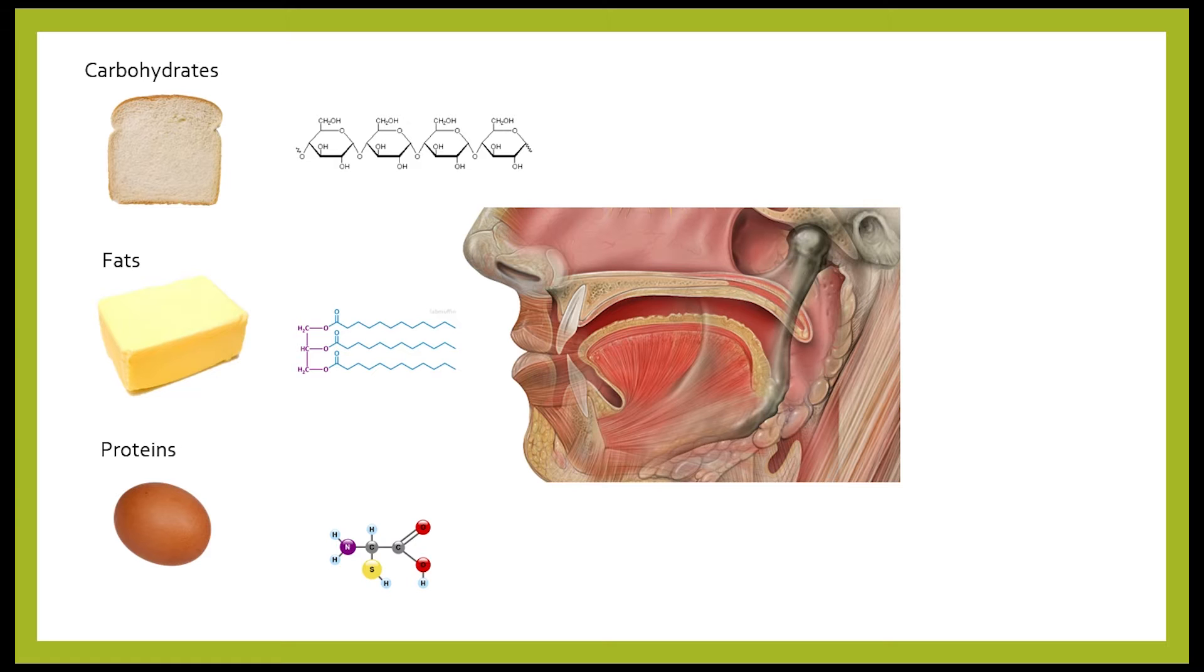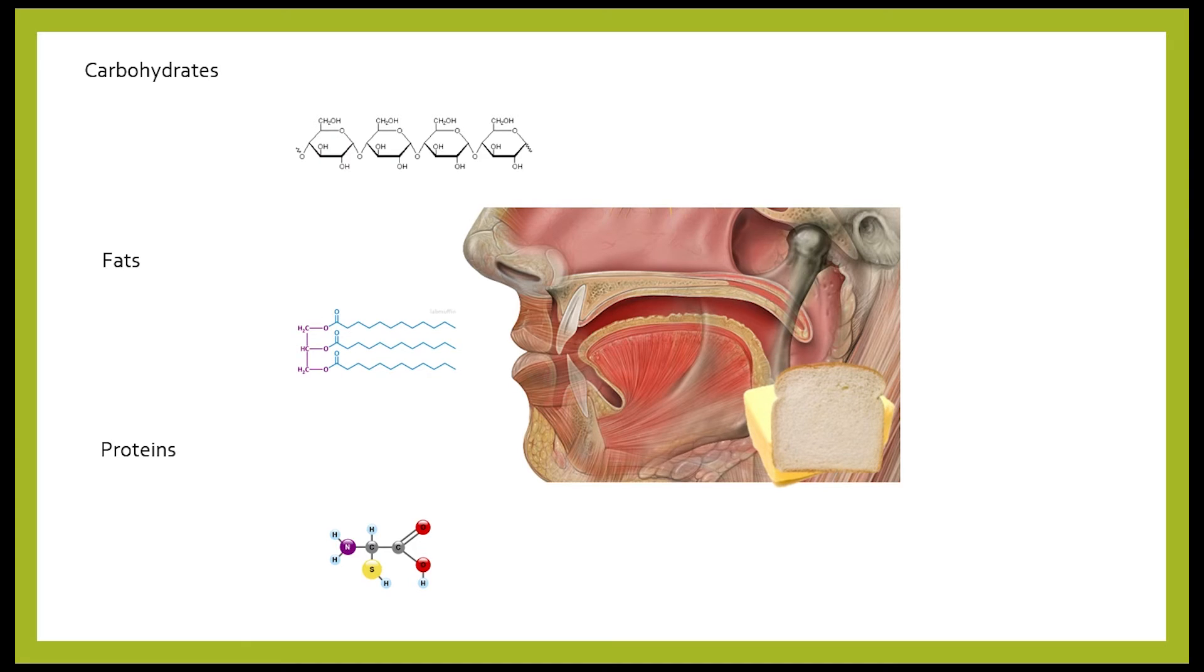When you eat something you first chew it to cut it into smaller pieces. During this the fats are broken down into smaller pieces and amylase in your mouth breaks down polysaccharide, for example starch, into smaller molecules that are called maltose. Proteins will also be chewed into smaller pieces.